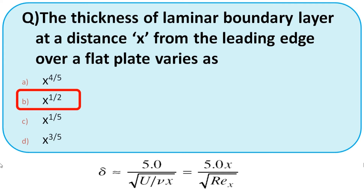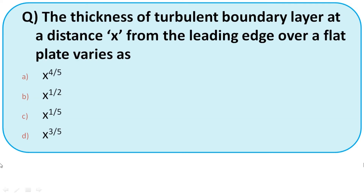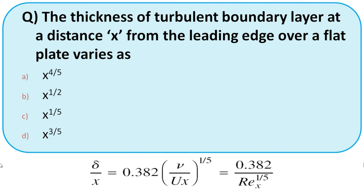Thickness of turbulent boundary layer at distance x from the leading edge over a flat plate varies as: x^(4/5), x^(1/2), x^(1/5), or x^(3/5). Recall the formula: turbulent boundary layer thickness = 0.382x/Re^(1/5). Since Re = ρVx/μ, when proportionating with respect to x, we get x^(4/5). So the right option for turbulent flow is option A.